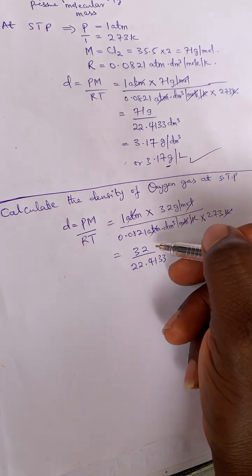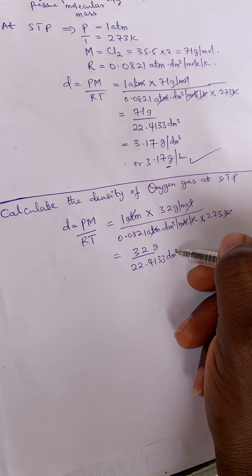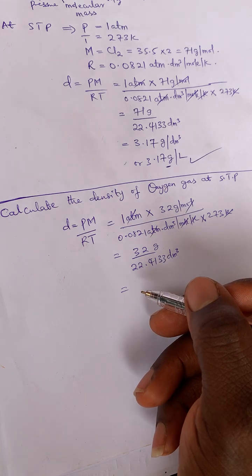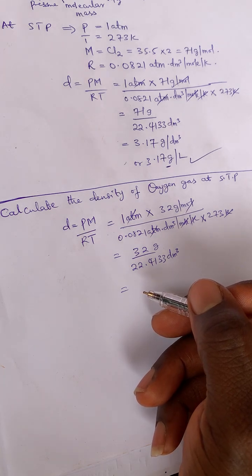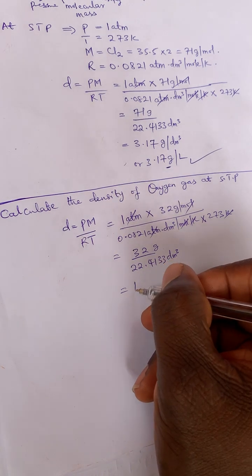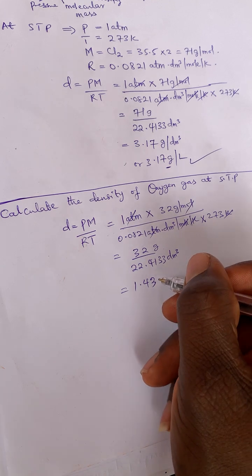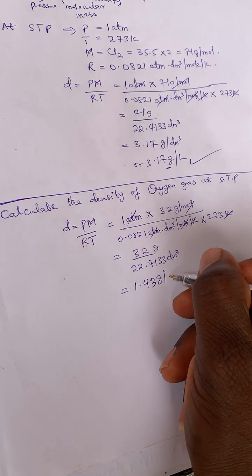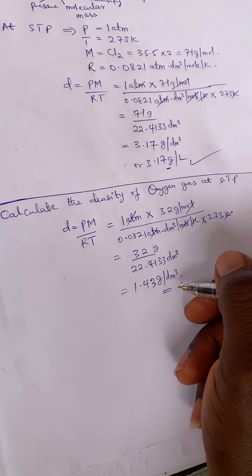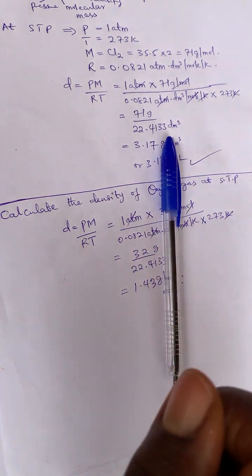And then this shall be in gram per dm cube. So 32 divided by 22.4133, and so we shall have 1.42743 gram per dm cube. So at STP, this will be the density of oxygen gas.